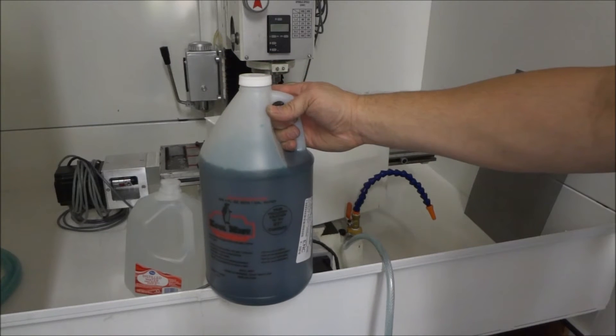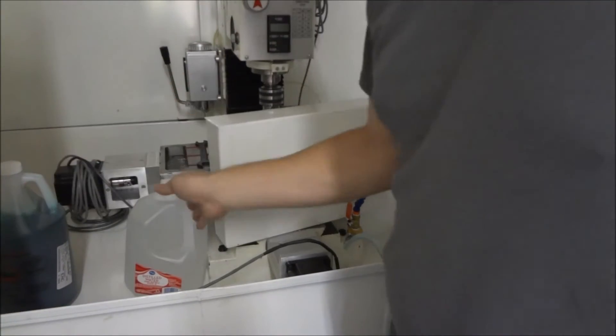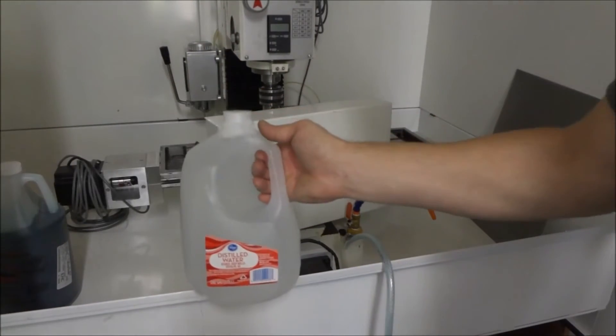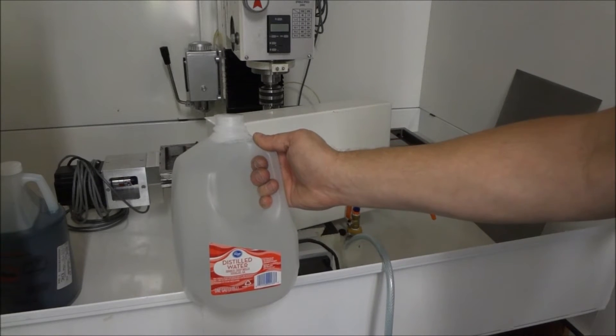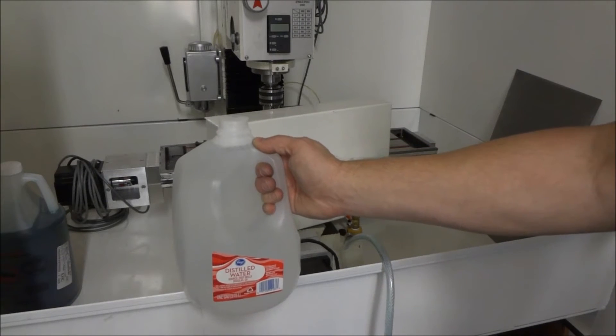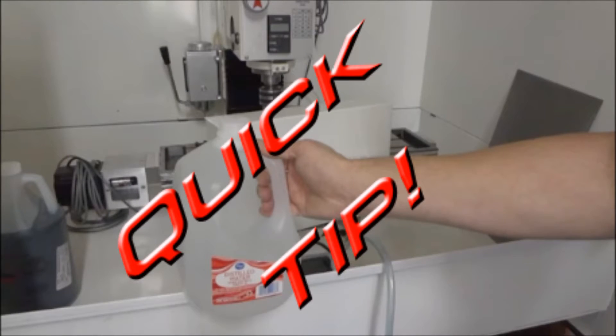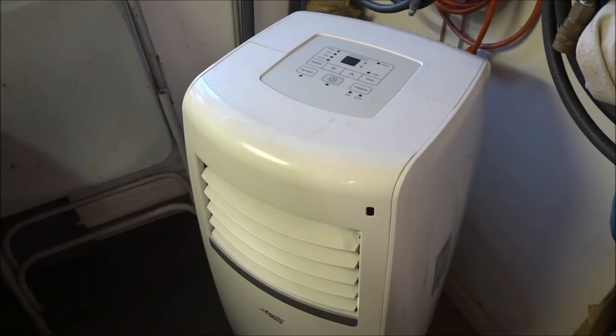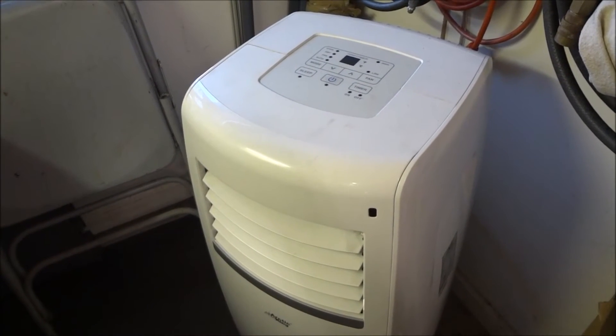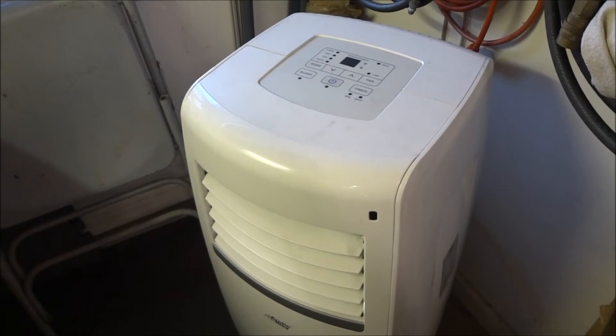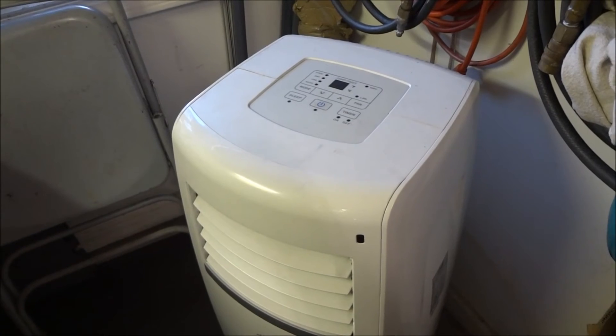Another thing when you're dealing with flood coolant is you want to use distilled water. You want to start out with a good base for your mixture. Now luckily for me living in the South, I run a portable air conditioner unit in the summertime, and the condensate that it generates is basically distilled water. So I use that to top off and add to my flood coolant. So I've already put in a couple of gallons in the flood coolant and it's ready to go.